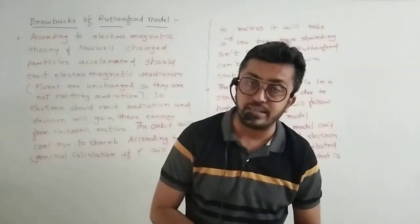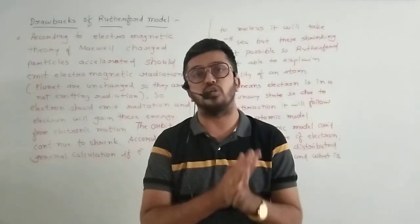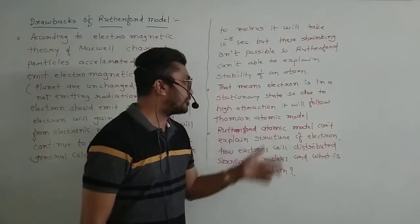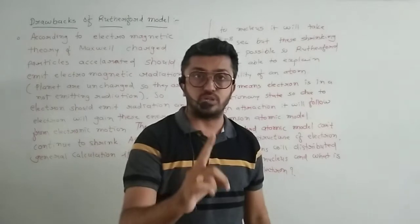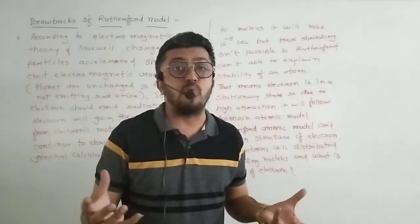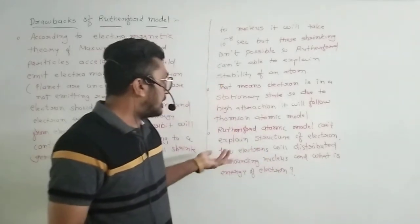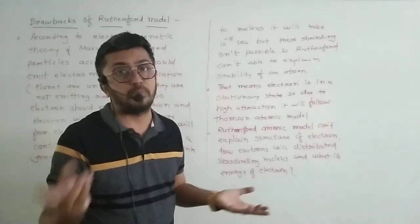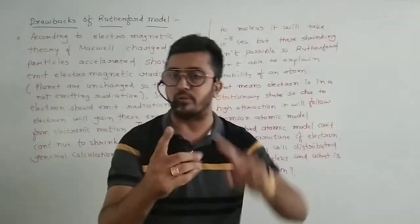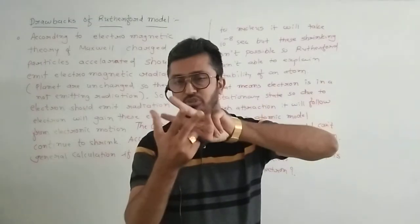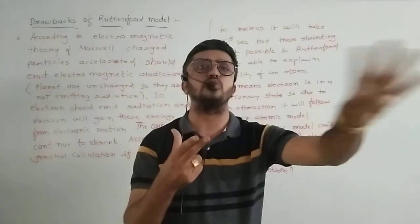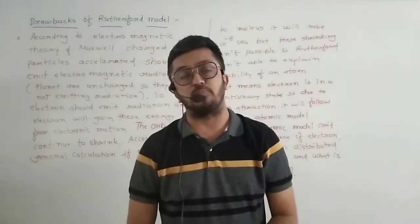The stability of an atom cannot be understood from Rutherford's atomic model. The second important drawback is that Rutherford's atomic model cannot explain the structure of the electron. The second point is how electrons will distribute around the nucleus — the distribution of electrons surrounding the nucleus is not explained. Also, the energy of the electron cannot be determined. So four important points are: stability of an atom cannot be explained, structure of electron cannot be explained, distribution of electrons surrounding nucleus cannot be explained, and energy of electron cannot be explained.